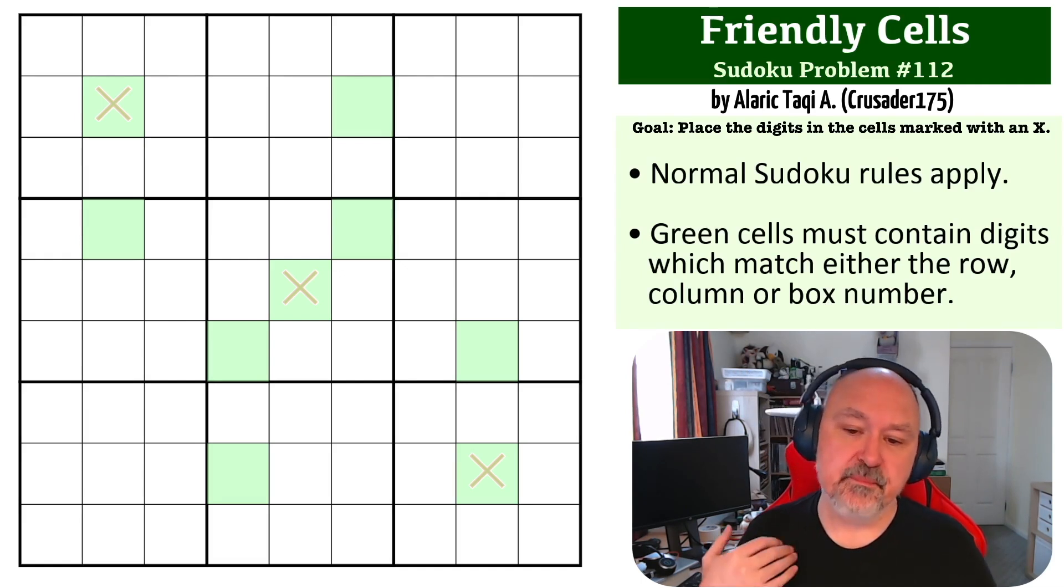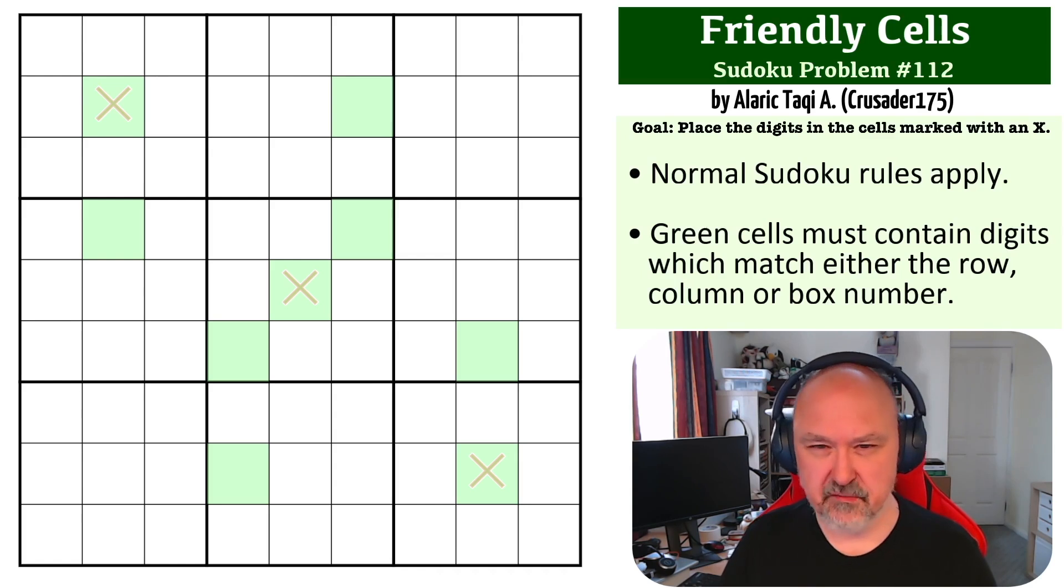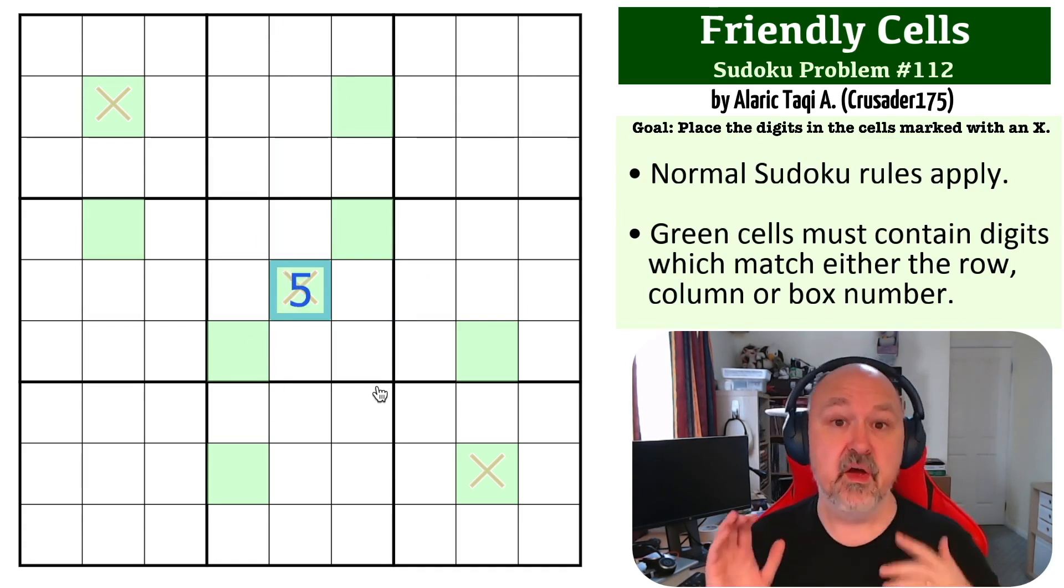So friendly cells can be a little bit tricky to wrap your head around. I've set a couple of puzzles using this. One of the first things worth looking at is this central cell because this is box 5, it's also row 5 and column 5. So this cell can only possibly contain a 5. We know that's a 5 right off the bat.